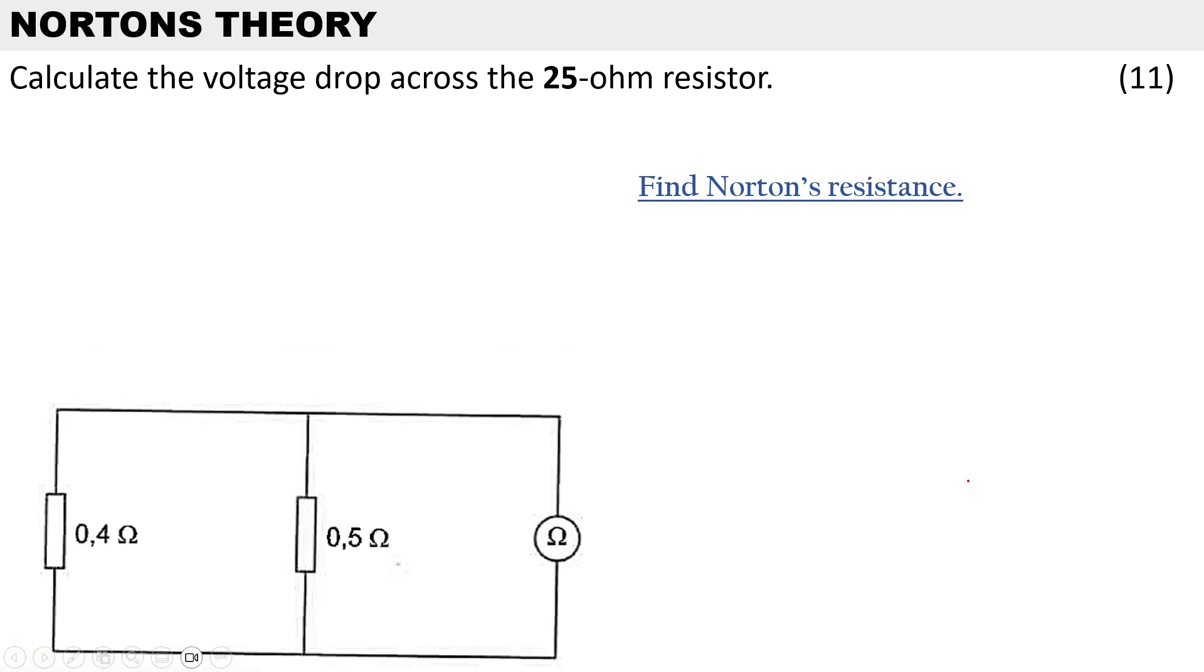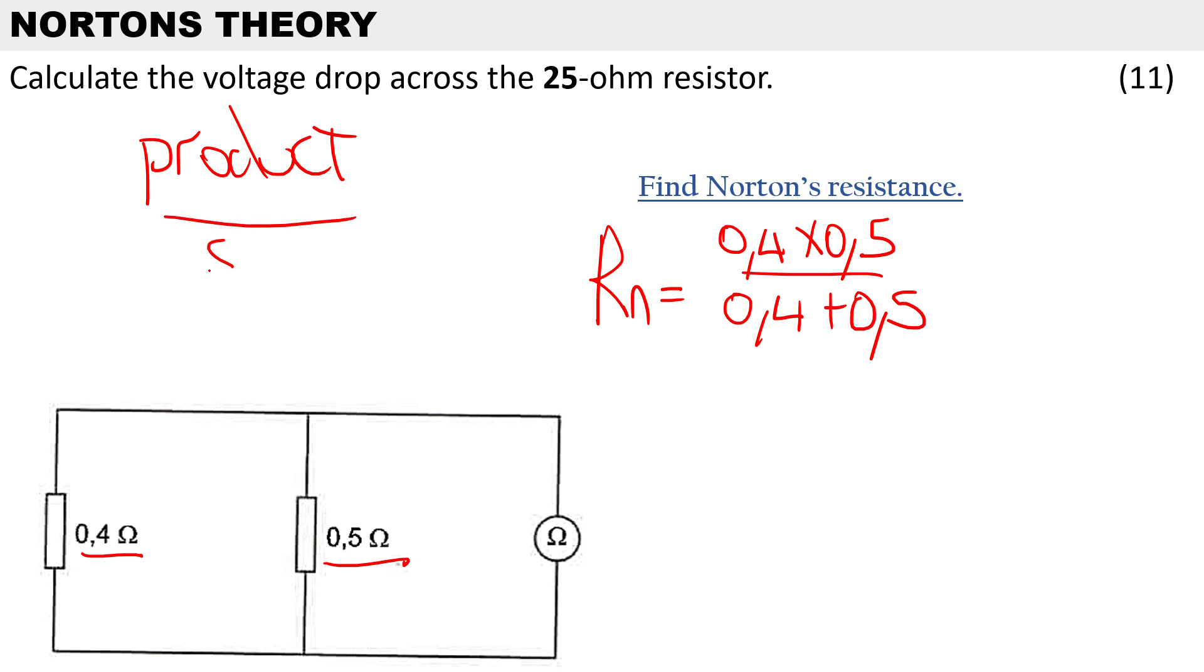Now that we've got Norton's current, we can go ahead and calculate Norton's resistance. You can see that we've got a 0.4 ohm resistor and 0.5 ohm resistor connected in parallel. So to calculate Norton's resistance it will be 0.4 multiply by 0.5 divided by 0.4 plus 0.5. The reason I'm using the product sum rule is because there are two resistors in parallel.